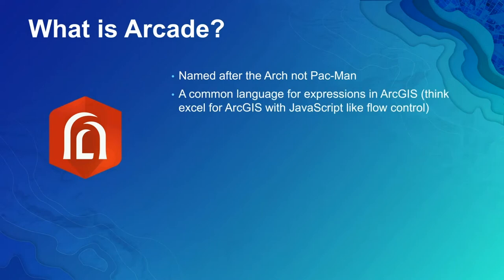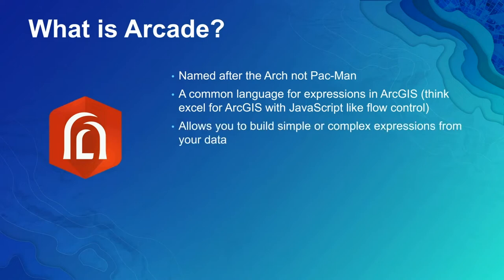Arcade can be understood by our clients such as ArcGIS Pro, ArcGIS Online, and Collector. It's also understood by the underlying technologies that power these clients, such as our JavaScript API and runtime SDKs. For that to work well, every application technology needs to be speaking the same language — and that's where Arcade comes in. You can think of Arcade like formulas in Excel, making easy and complex calculations which can then be used for visualization, pop-ups, labeling, and analysis.